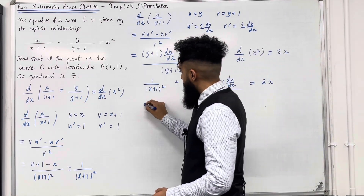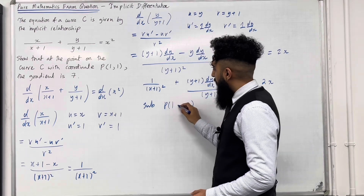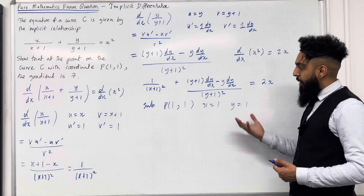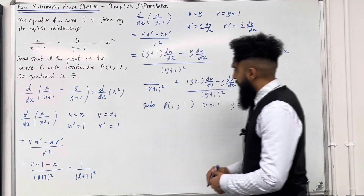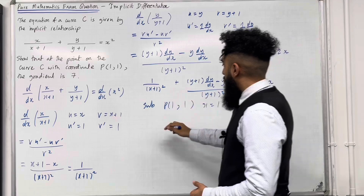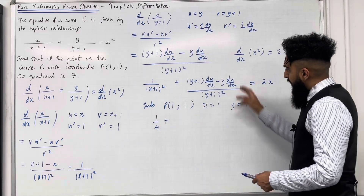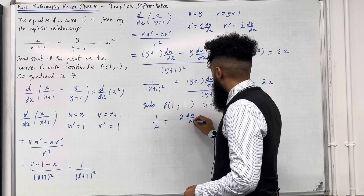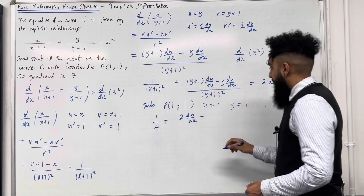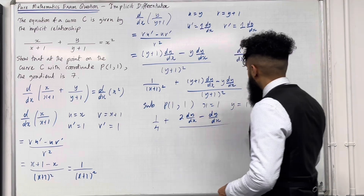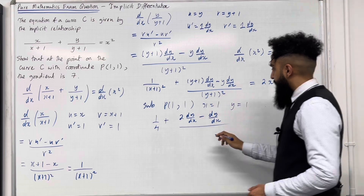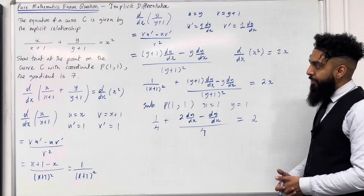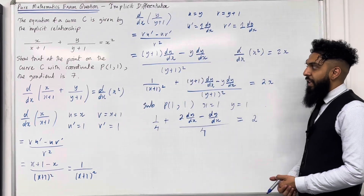Now I'm going to substitute the coordinates of P, x equal 1 and y equal 1, into this equation to get dy over dx at the point P, and I need to show that it is precisely 7. The first term becomes 1 over 4. In the numerator of the second fraction, 1 plus 1 is 2, giving 2 dy over dx minus 1 lot of dy over dx, which is just dy over dx, all over 2 squared which is 4. The right hand side becomes 2 multiplied by 1, which is 2.